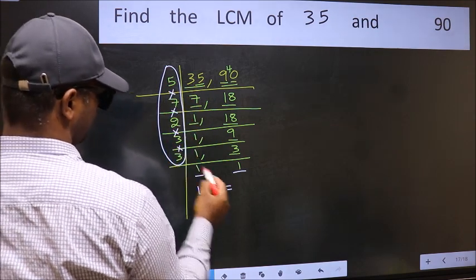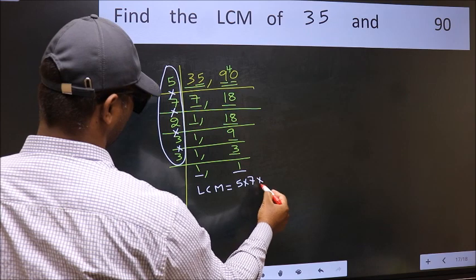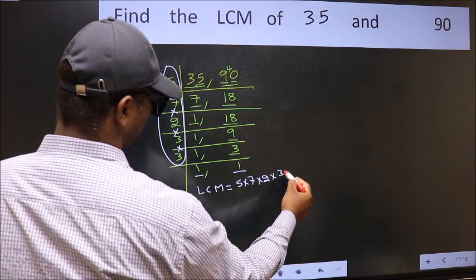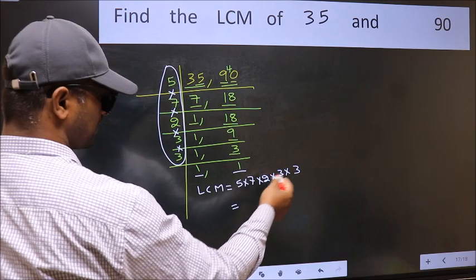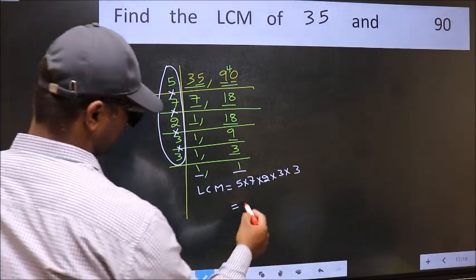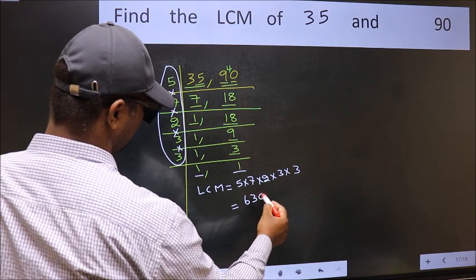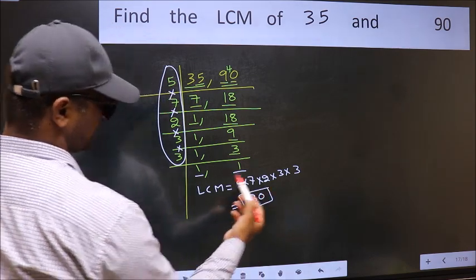That is 5 into 7 into 2 into 3 into 3. When we multiply these numbers, we get 630 as our LCM.